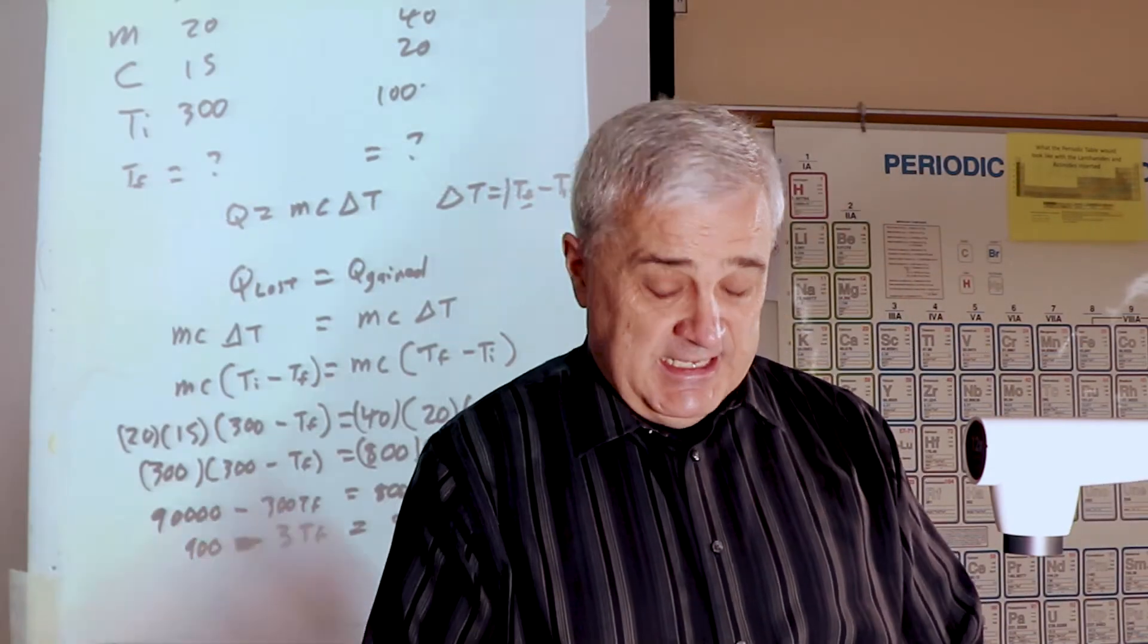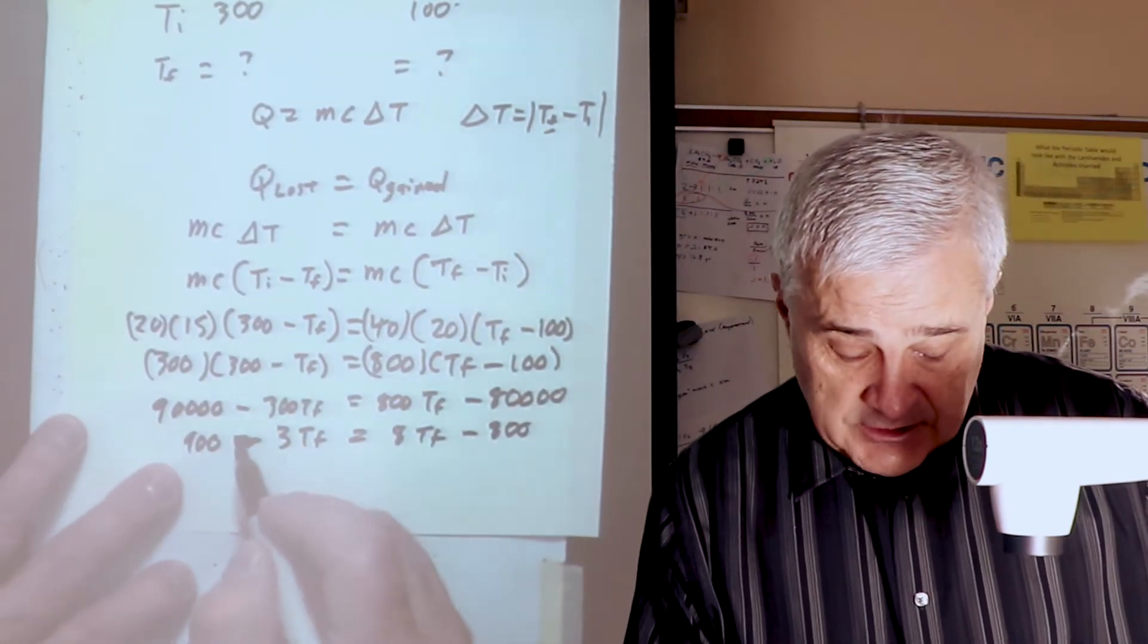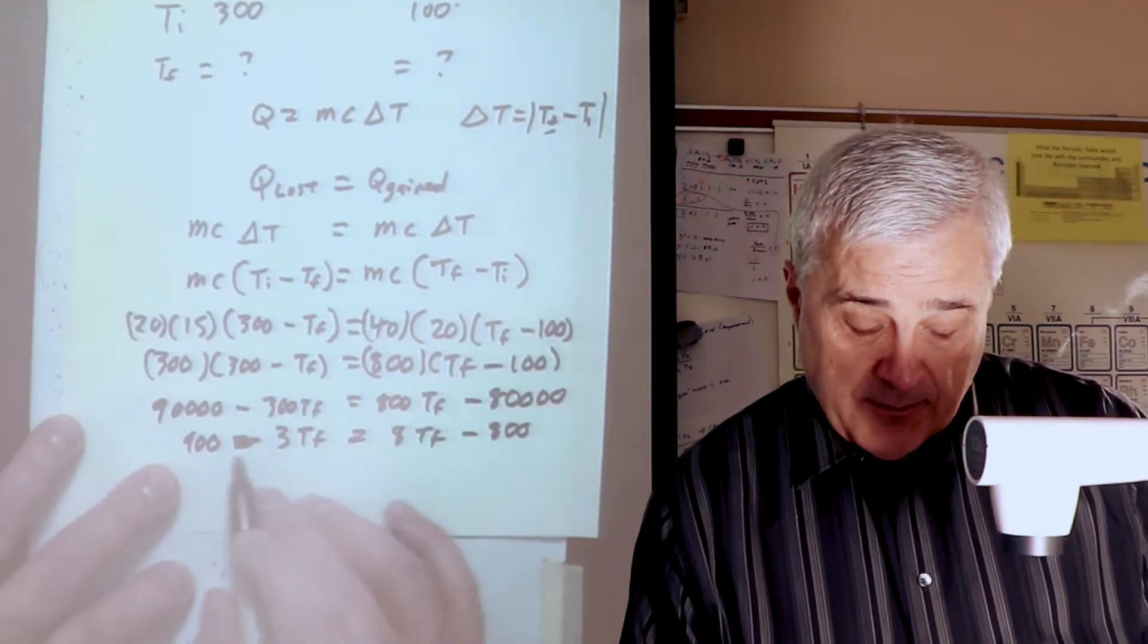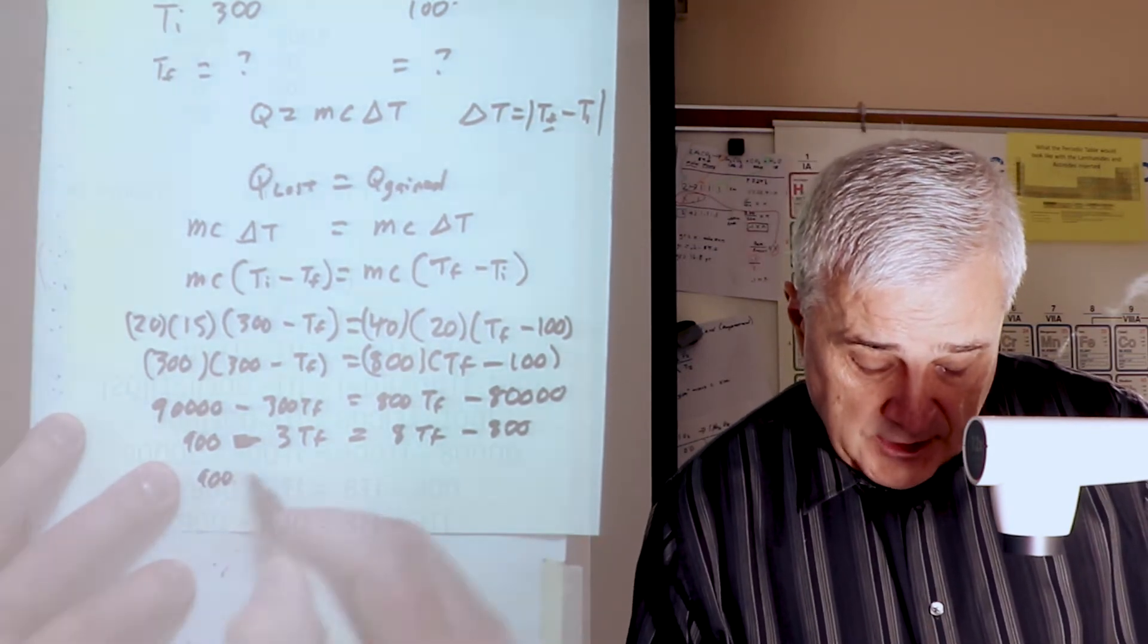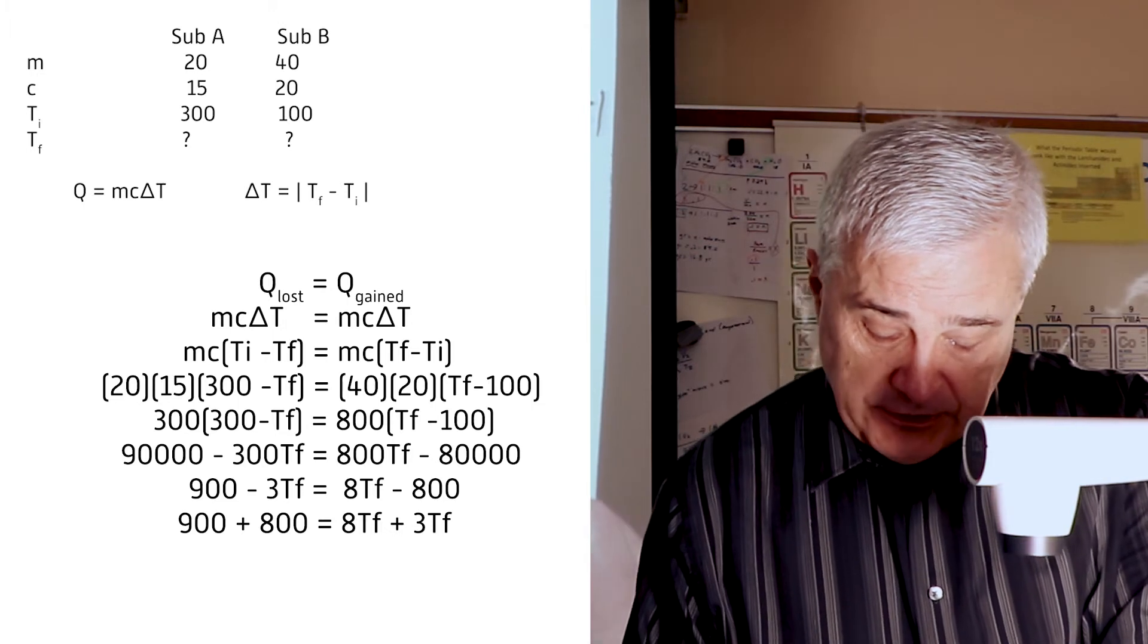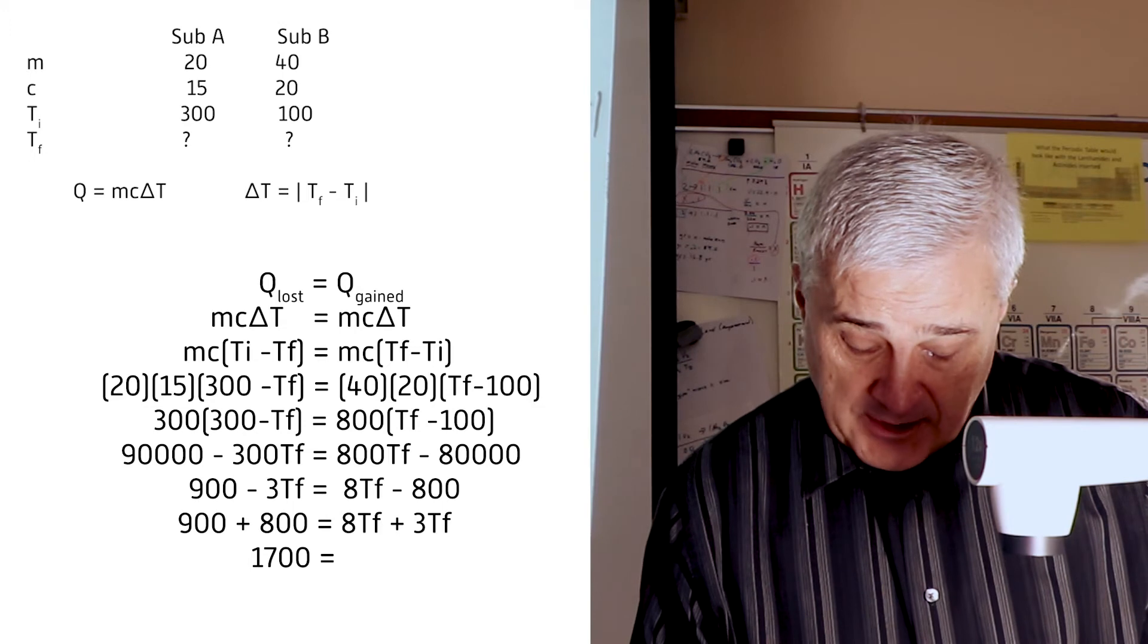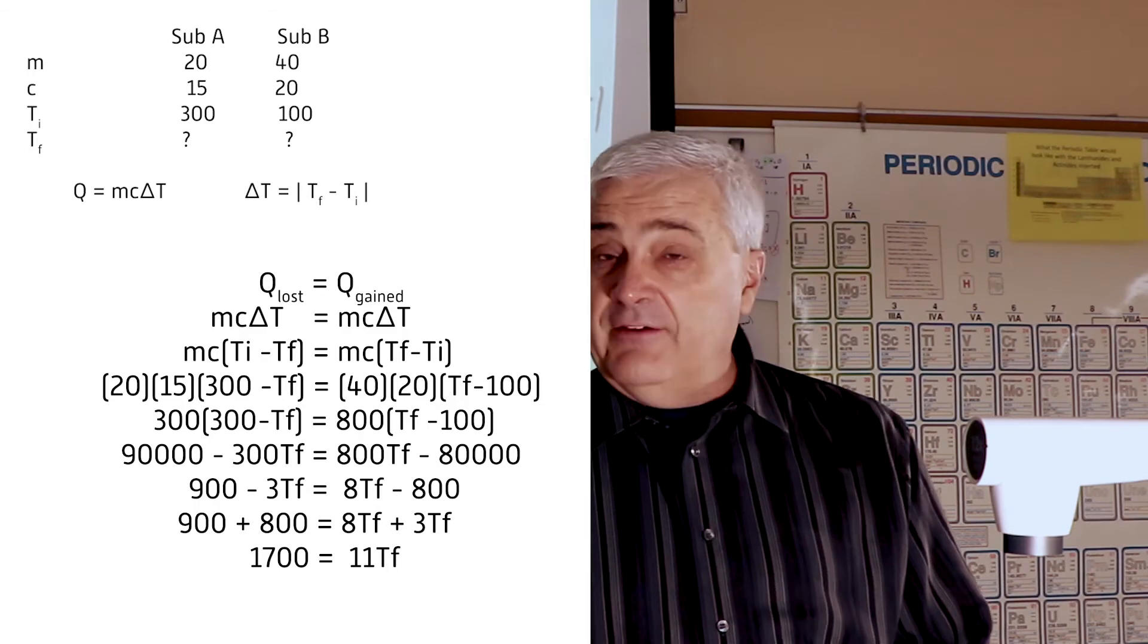Now, if you're using real specific heat, you're not going to get the convenience of dividing by 100, but for the algebra purposes, it's a lot clearer. If I bring the 8 over, that's going to be 900 plus 800. I'm going to take the minus 3 over, so I'm going to have 900 plus 800 equals 8 T sub F plus 3 T sub F. 9 and 8 is 1,700 equals 11 T sub F.